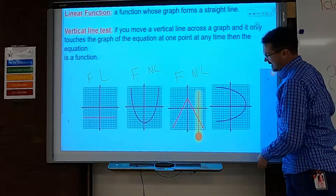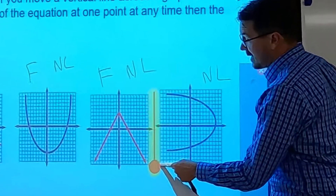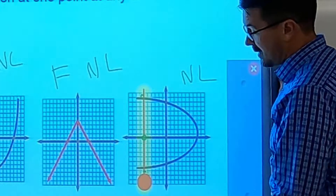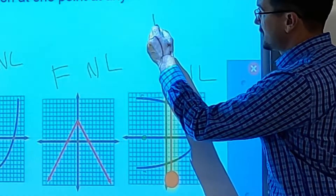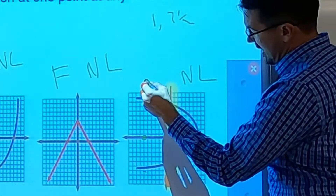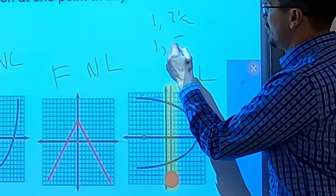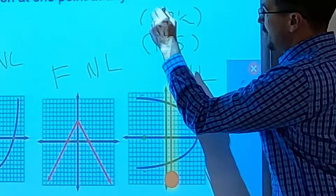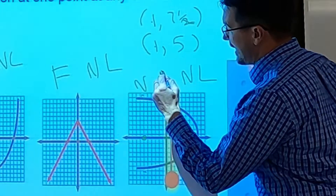I took a parabola and flipped it to the side here. This is definitely not linear. When I stop the vertical line, the x-value has two different y-values — for instance when x is 1, y can be about 7.5 and also about 5. I put in 1 and get 7.5, put in 1 and get 5 — that's not a function. So this is not linear and not a function.